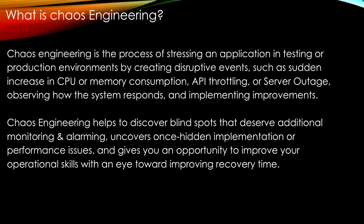Chaos engineering helps you discover any blind spots that deserve additional monitoring or alarming. For example, you may not have any alarm when your CPU utilization goes beyond 70 percent, and during this engineering test you find that is missing. It also helps you uncover hidden implementation or performance issues.